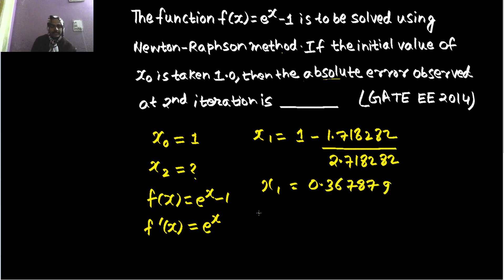Now let's jump in to find the value of x2, which will be 0.367879 minus... Now you need to find e^(0.367879) minus 1. This is giving you 0.444667.